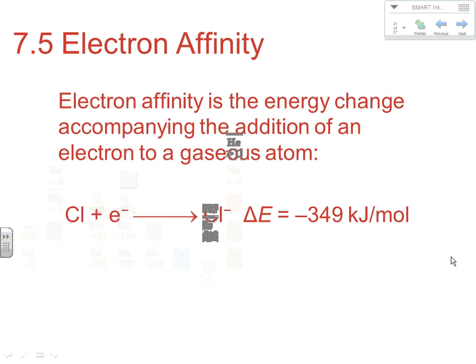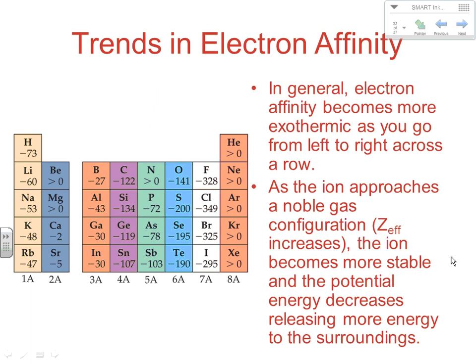Electron affinity is how much energy is involved when we add an electron. For chlorine, it's negative 349 kilojoules — it releases energy. That means potential energy was dropping and many of these are exothermic. As we add that electron, we end up with a lower potential energy situation and that difference gets released. Electron affinity becomes more exothermic as you go from left to right across the periodic table. As the ion approaches a noble gas configuration, effective nuclear strength is increasing, the ion is becoming more stable, potential energy decreases, releasing more energy to the surroundings.